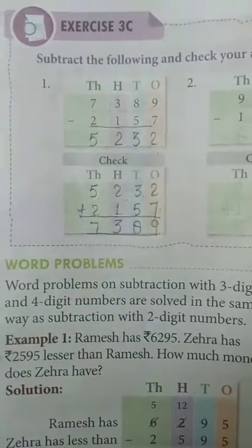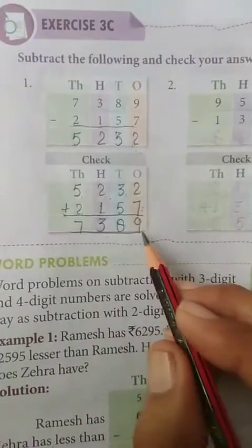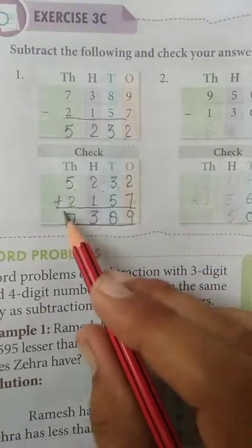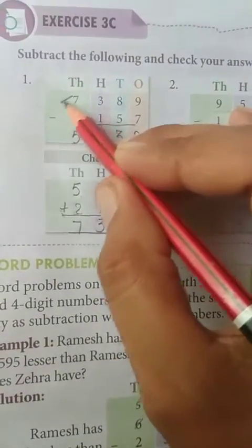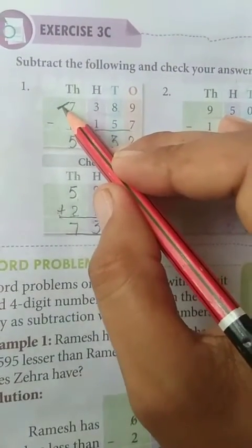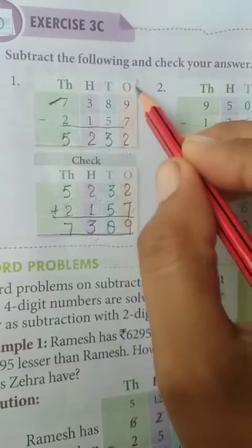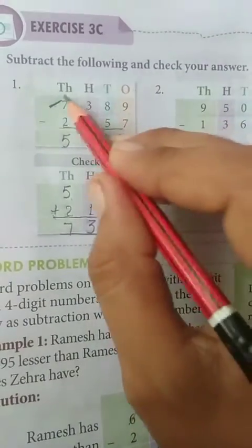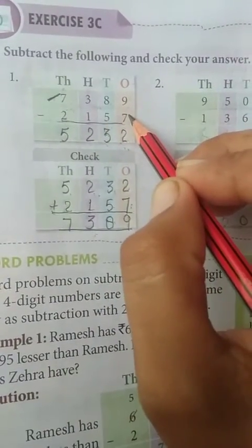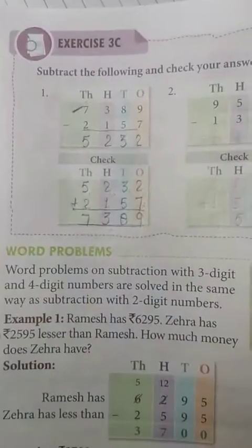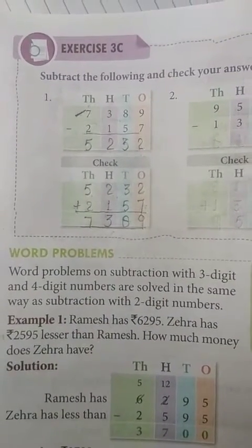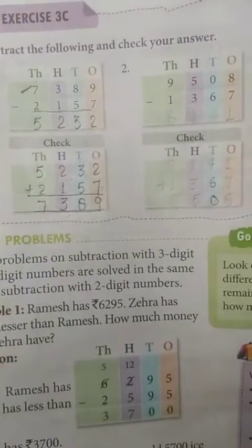7,389. अब यह जो number है, यह first number पर जो है, यह होना चाहिए. अगर आपका यह number नहीं आया है, that means your answer is wrong. So students, in this way, you can subtract the following questions and check your answer.